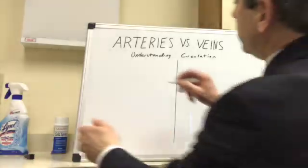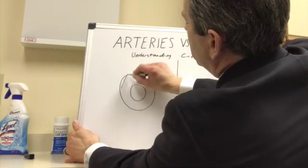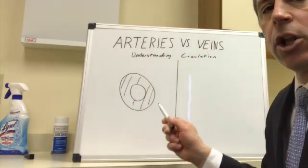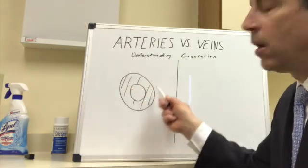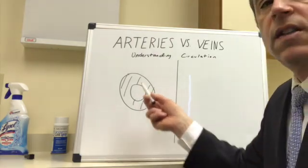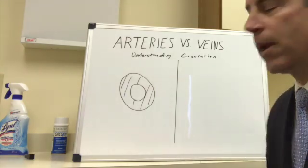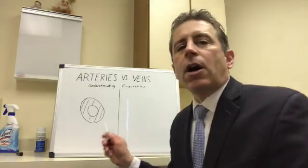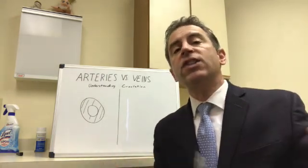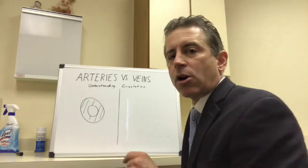Let's look at the artery first. The artery has a very large wall and the wall is filled with muscle. In the center of the artery is the lumen. The lumen is the channel which the blood flows through. The important thing about the artery is that it actually has a muscle that helps to squeeze the blood even against gravity to its destination. That's how an artery works.